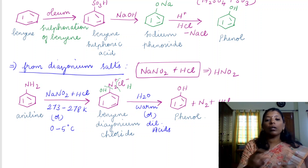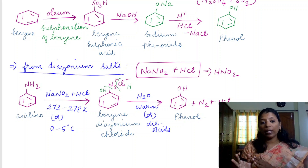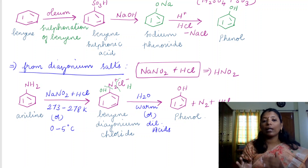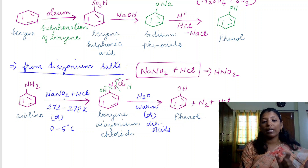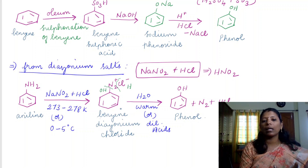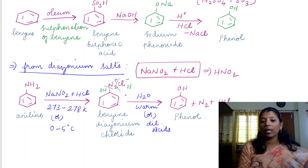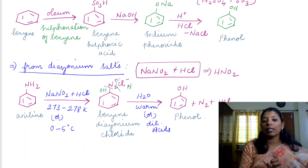To summarize method two: any aromatic primary amine such as aniline, when treated with nitrous acid (NaNO2 + HCl) at 273 to 278 Kelvin, gives benzene diazonium chloride. This diazonium salt, when warmed with water or treated with dilute HCl, gives phenol. The carbon-nitrogen bond cleaves, OH attaches to the carbon, N2 is liberated as nitrogen gas, and HCl is obtained as a byproduct.